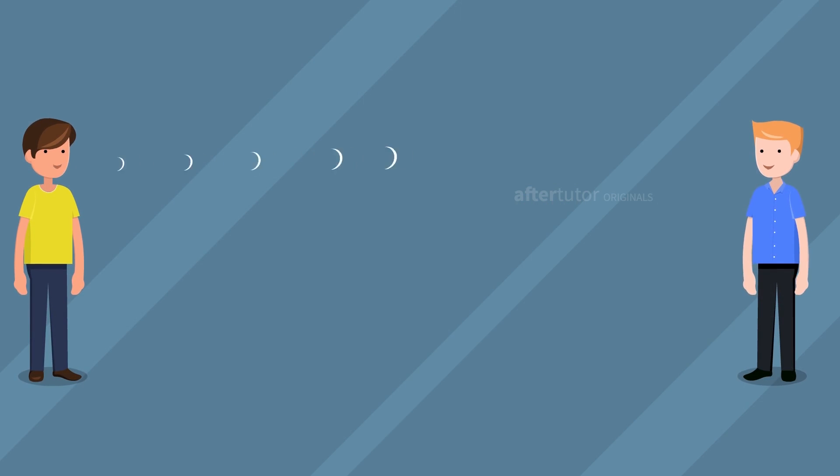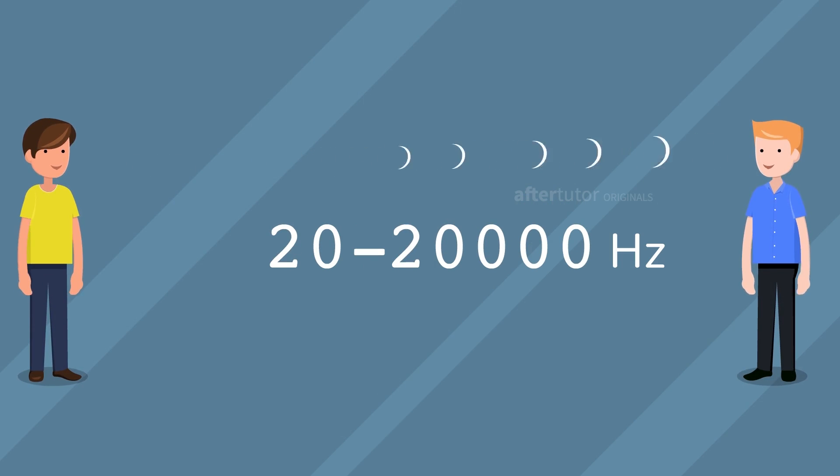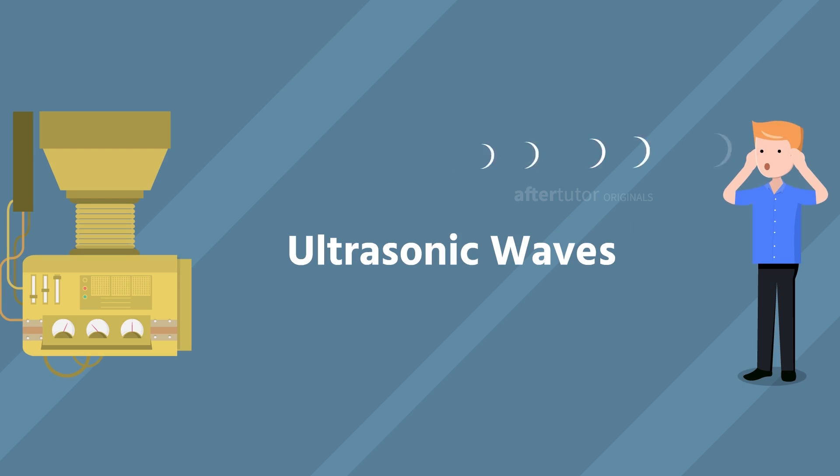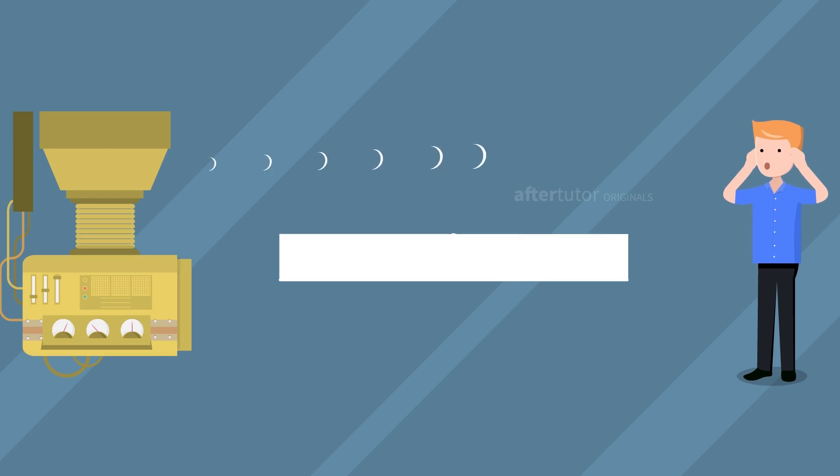Human hearing capacity ranges from 20 to 20,000 hertz. But ultrasonic sound waves have frequency more than 20,000 hertz. Since it's beyond the human audible range, it is termed as ultrasonic waves, which travel with a speed of 330 meters per second.